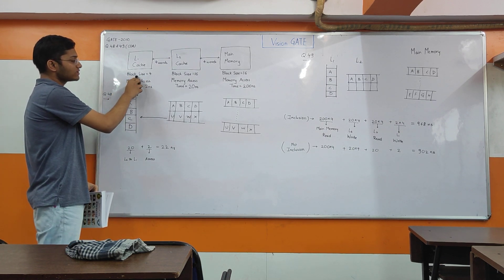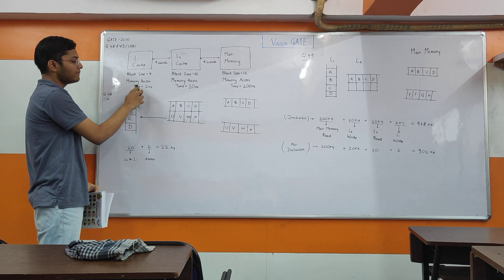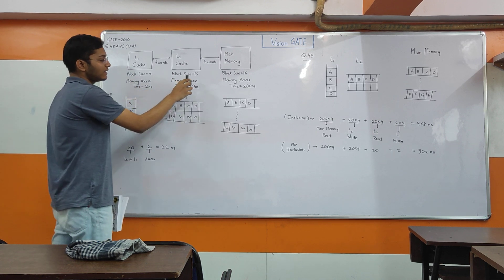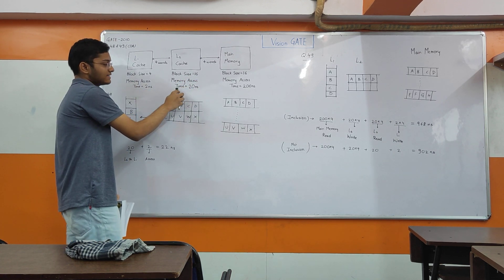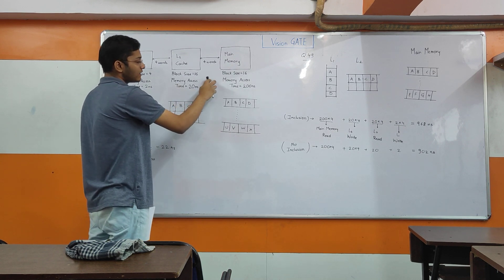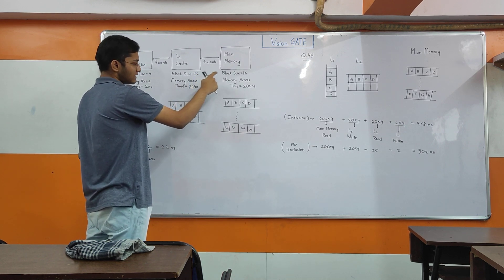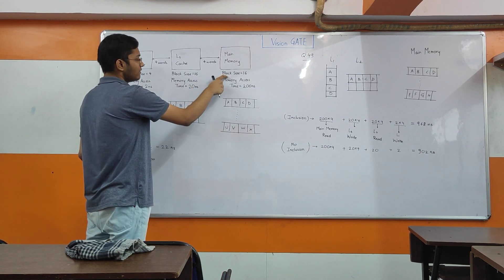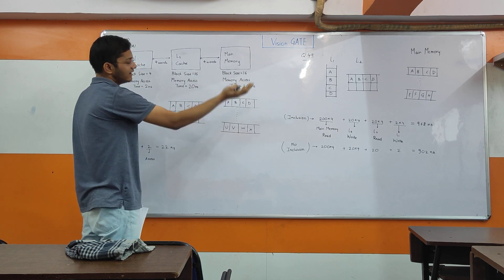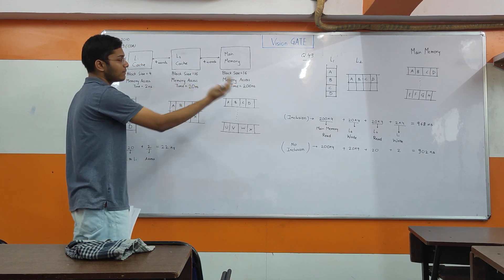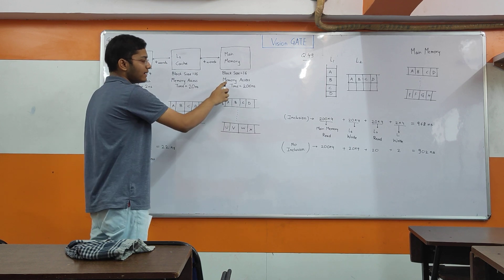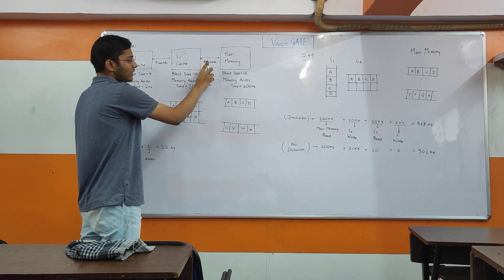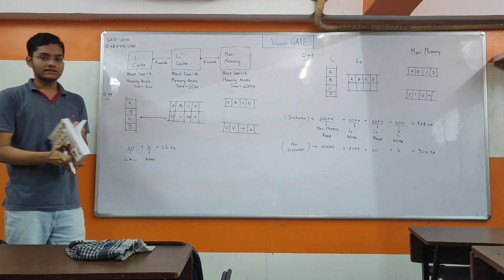So to summarize: the block size in L1 is 4 words and memory access time is 2 ns. The block size in L2 is 16 words and access time is 20 ns. We also assume the block size for main memory is 16 words, since data is transferred in blocks, and the main memory access time is 200 ns. At a time we can transfer 4 words.